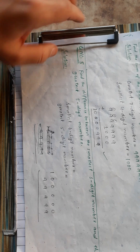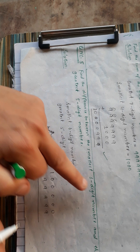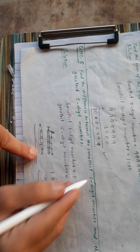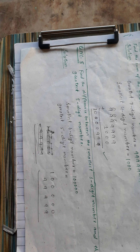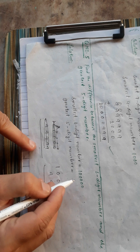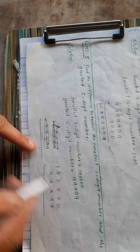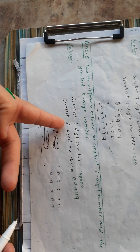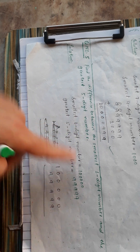The smallest six-digit number — counting digits 1, 2, 3, 4, 5, 6 — is 100,000, which is a 1 followed by five zeros. The greatest five-digit number — counting digits 1, 2, 3, 4, 5 — uses all 9s, so it is 99,999.